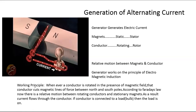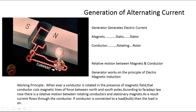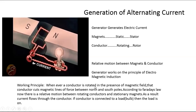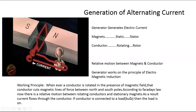To generate electricity we require magnets — magnets are constant, acting as stator — and the conductor is rotating, acting as rotor. We create relative motion between conductor and magnet. Whenever a conductor is rotated in the presence of magnetic energy, that conductor cuts magnetic lines of force. As a result, current flows through the conductor. If connected to a bulb, the bulb turns on.